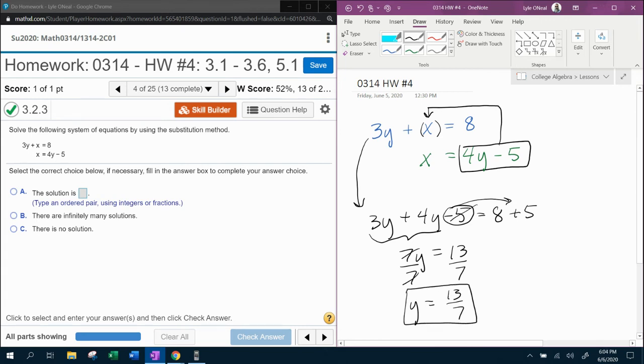So we get y is 13 sevenths. That's not going to divide nicely, so we're going to leave it fractioned up.